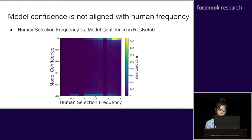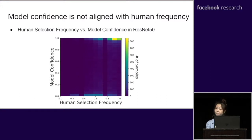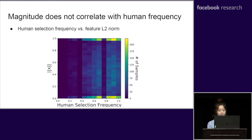We first look at the relation between model confidence and human selection frequency among all testing examples of the ImageNet test sets. Our results in the color map show that model confidence is not aligned with human selection frequency, verifying the known gap between the human visual system and CNNs. Similarly, we found that the L2 norm of the feature embedding also does not strongly correlate with human selection frequency.